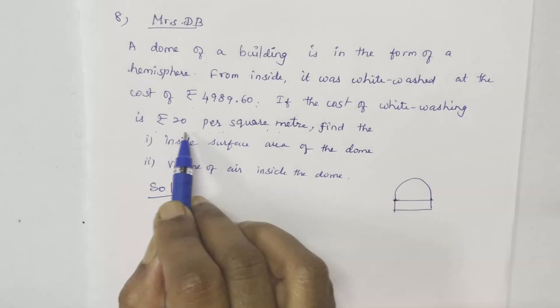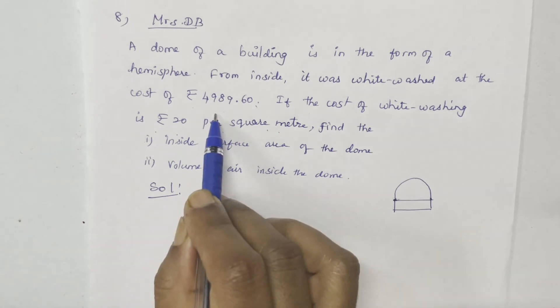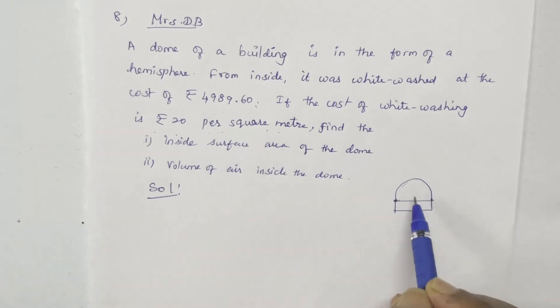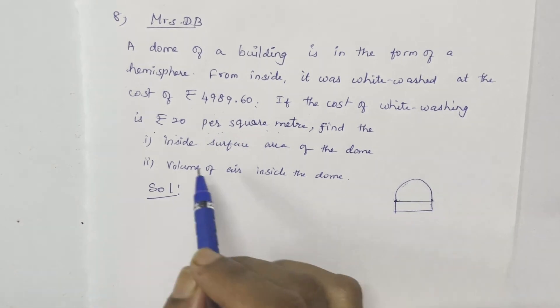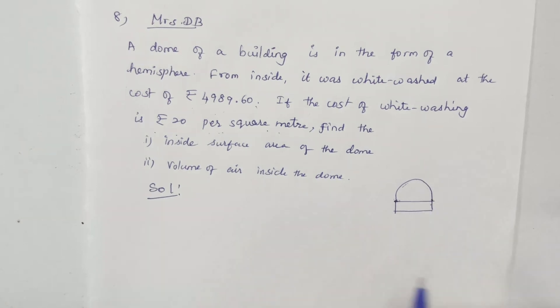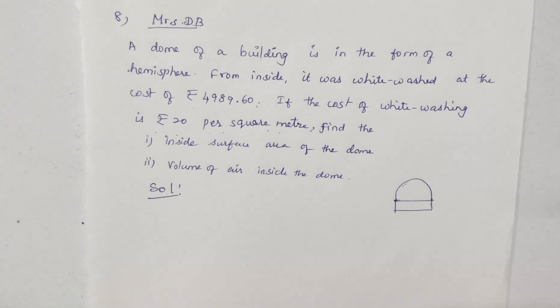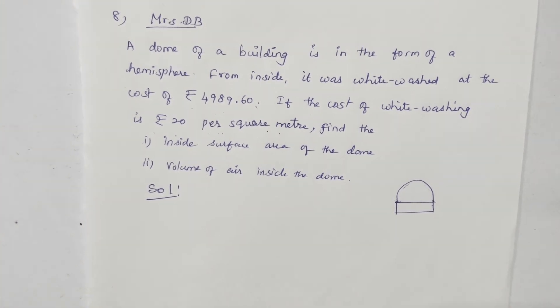So what do I calculate? The total cost for painting divided by the cost per square meter gives the surface area of the dome. If you calculate the surface area, you can then calculate the volume.